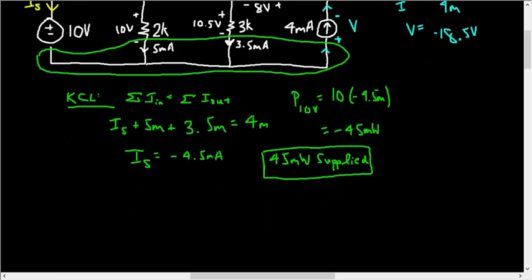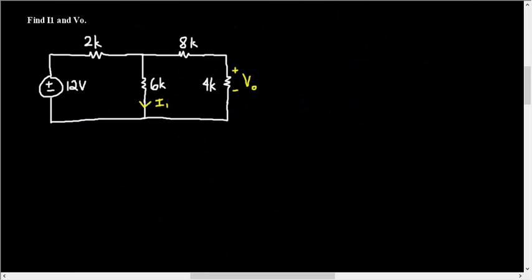Let's move on to a different problem. In this circuit, they're asking us to find the current I1 and the voltage V0. There's multiple ways to solve this, though. We're going to use voltage division twice to solve this.